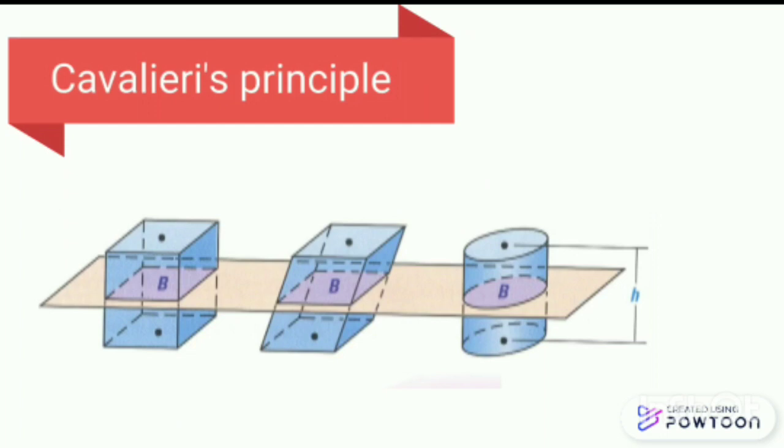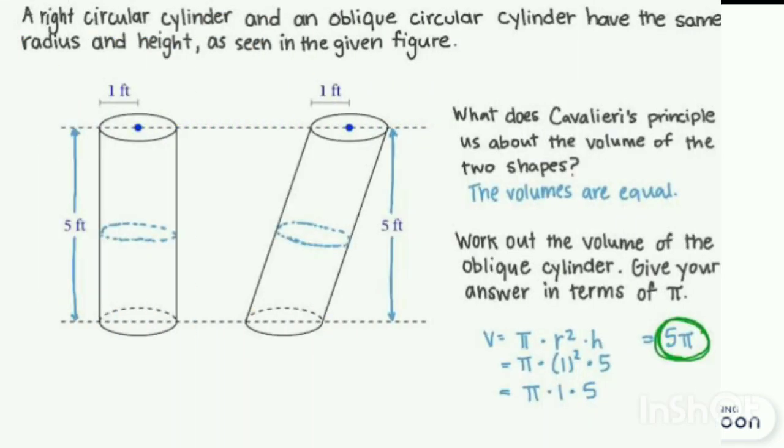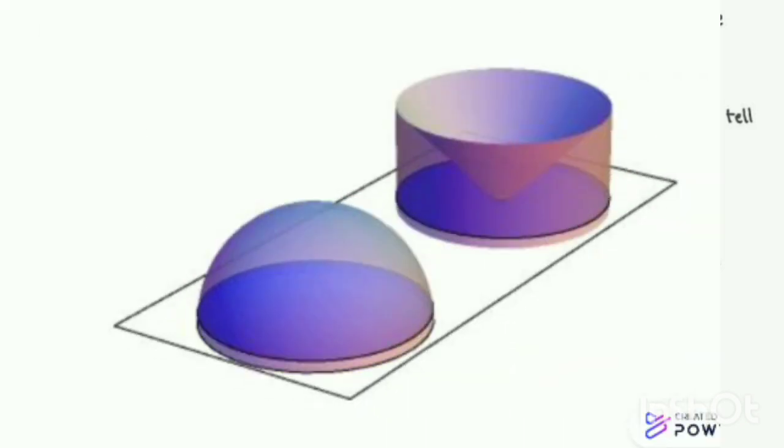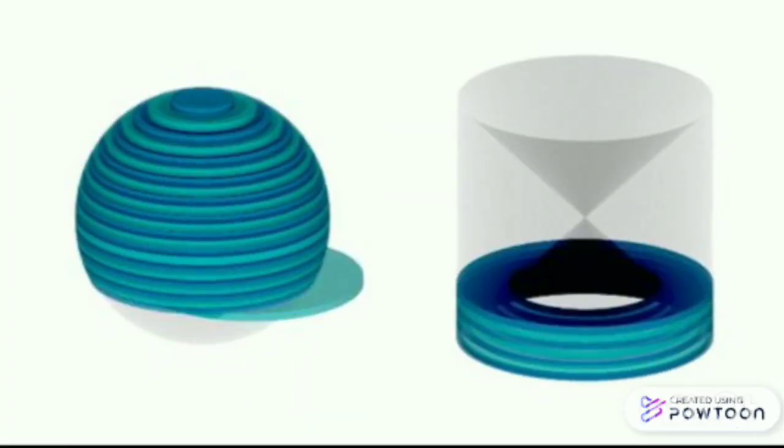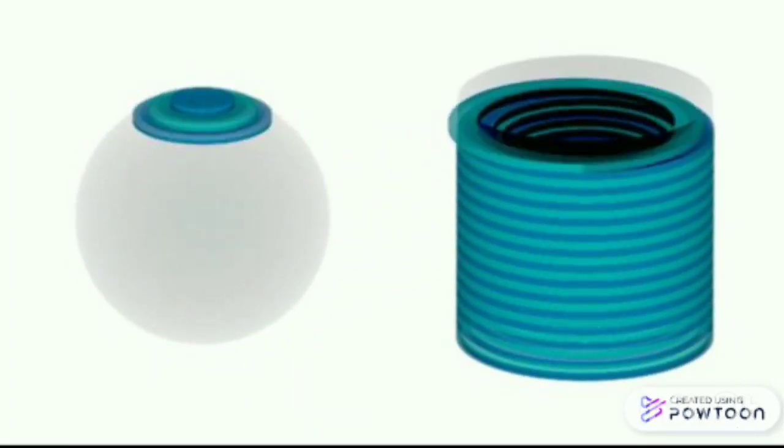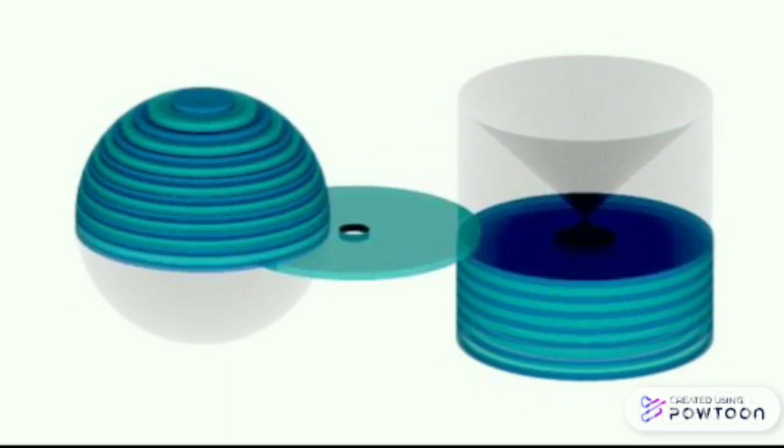In case of three dimensions, suppose two regions in three space - that is, two solids - are included between two parallel planes. If every plane parallel to these two planes intersects both regions in cross sections of equal area, then the two regions have equal volumes.